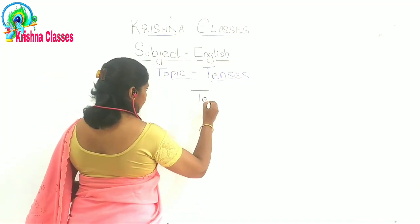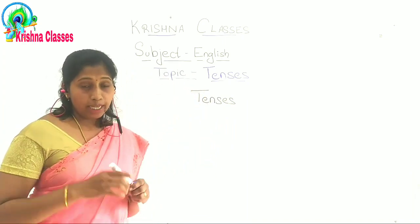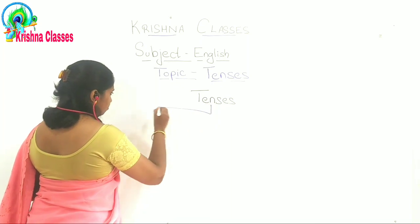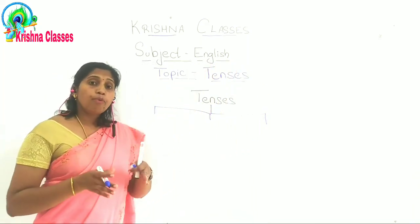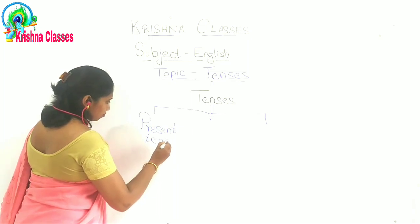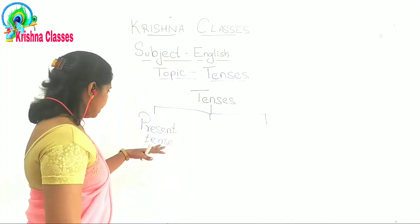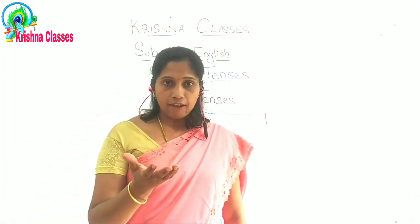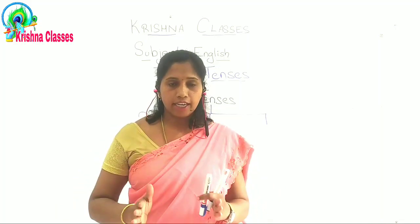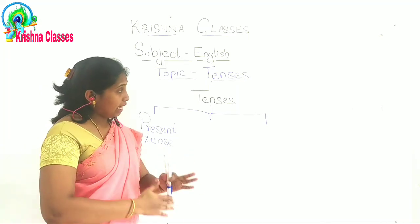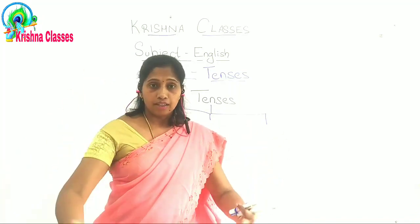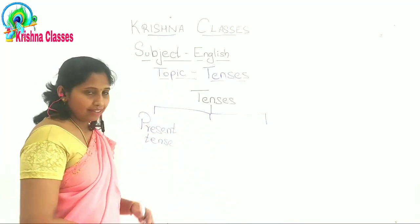There are three types of tenses: present tense, past tense, future tense. Why are we focusing on the first one, that is present tense? We give importance to present tense because the present is the time which we have — we have the power to do something right now. Whatever action I am doing, right now I can do it. That's why we give more importance to present tense.